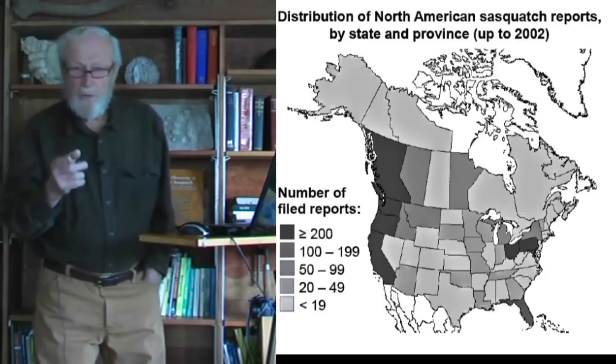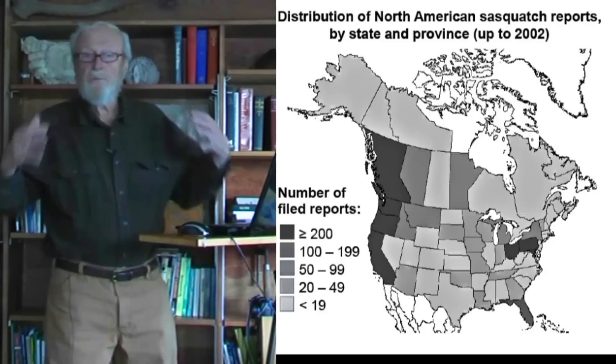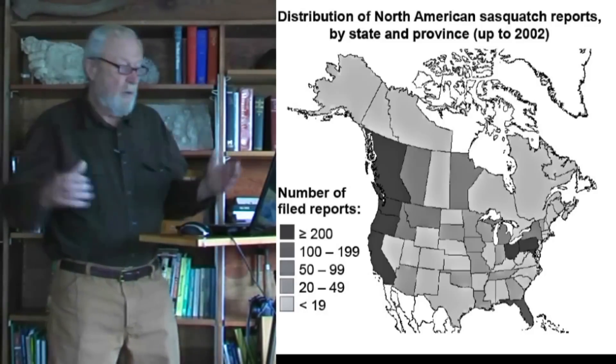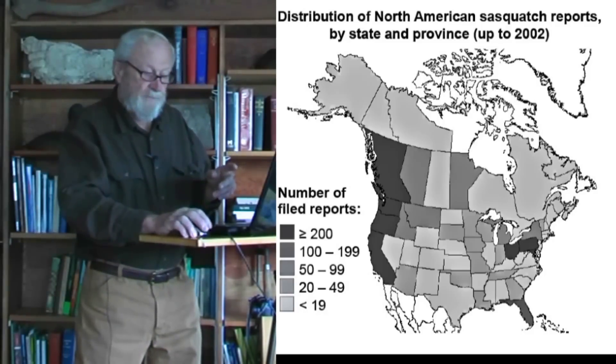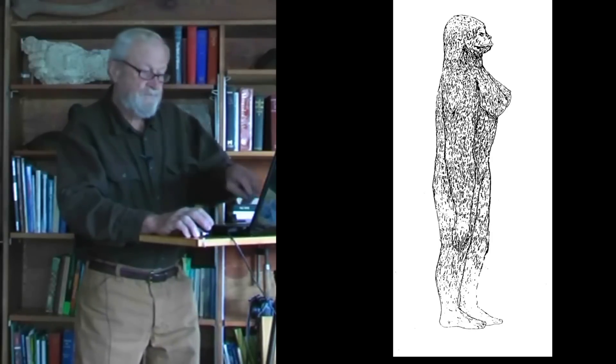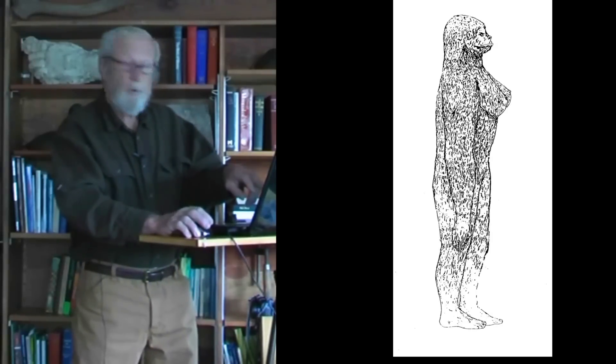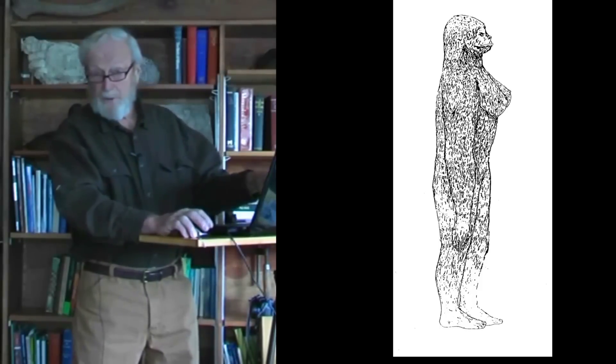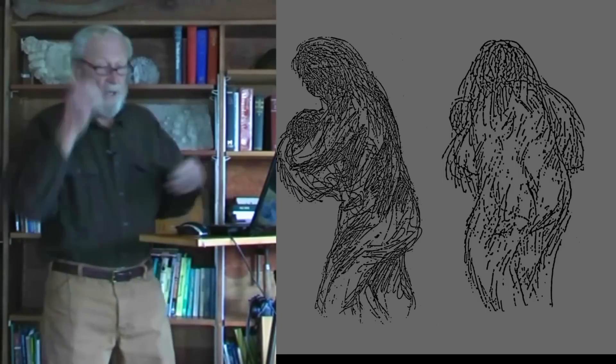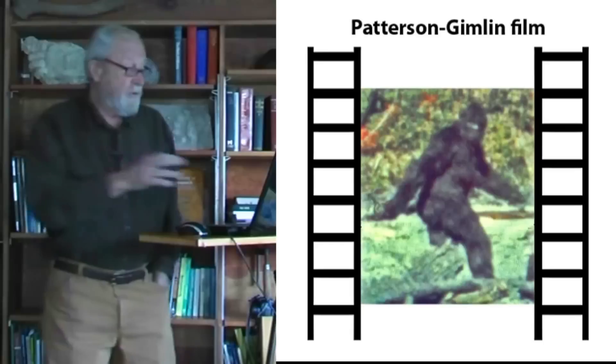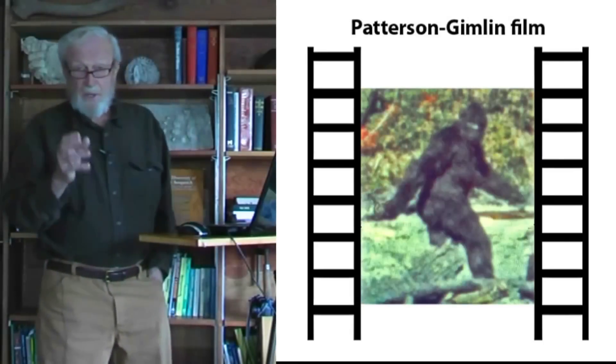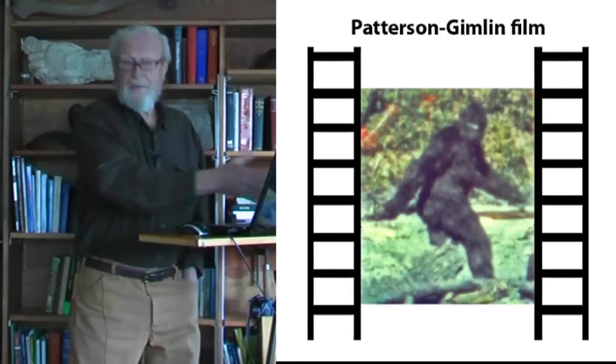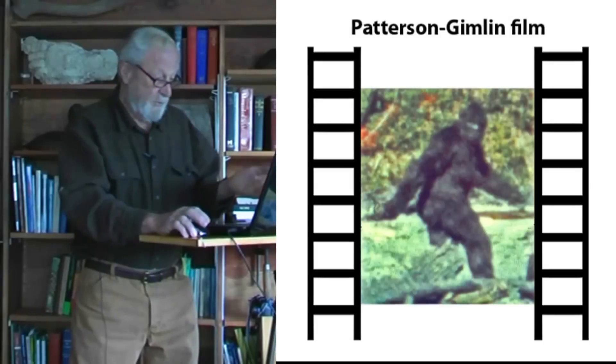Not all Sasquatches appear to be these great, hulking, wide-shouldered males. Some have been described as females, either on the basis of visible breasts, such as this one, or because it was carrying an infant, such as this one. And the controversial Patterson-Gimlin film, in good copies of that film, you can see that appears to be a female with visible breasts.